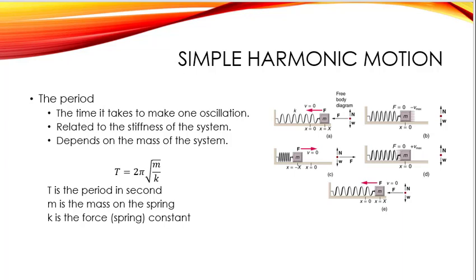And then looking a little deeper at period, it's the time it takes to make one oscillation. And it's related to the stiffness of the spring when you're talking about springs. And it's going to depend on the mass. Period is in seconds. Mass is the amount of mass on the spring, and it's going to be in kilograms. And if you remember, K is the spring constant.